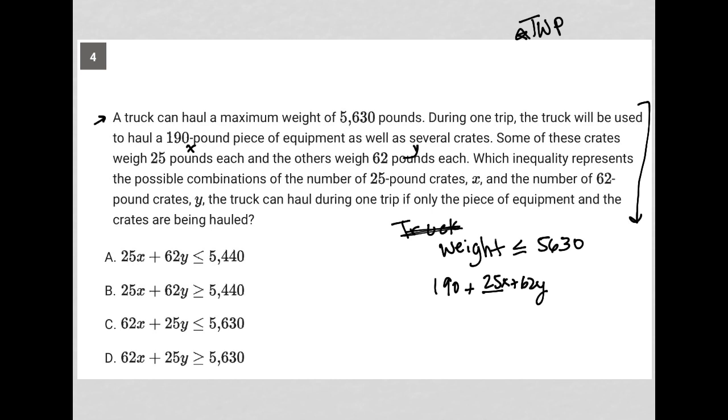Which inequality represents the possible combinations of the number of 25 pound crates X and the number of 62 pound crates Y. The truck can haul during one trip if only the piece of equipment and the crates are being hauled. So here is our translation. 190 plus 25X plus 62Y is less than or equal to 5,630.